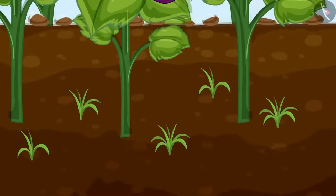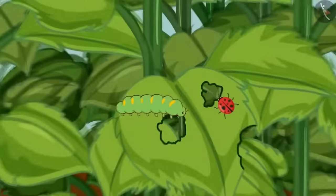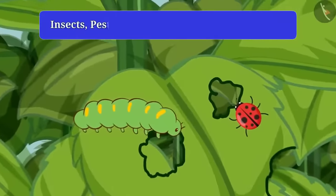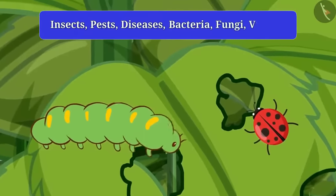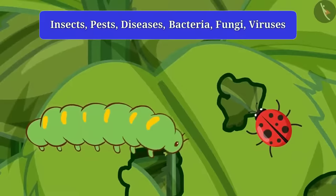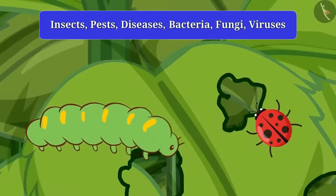Do you know? Apart from weeds, what can damage crops? Just think. Yes, apart from this, insects, pests and diseases also destroy the crops. Diseases in crops are caused by bacteria, fungi and viruses.